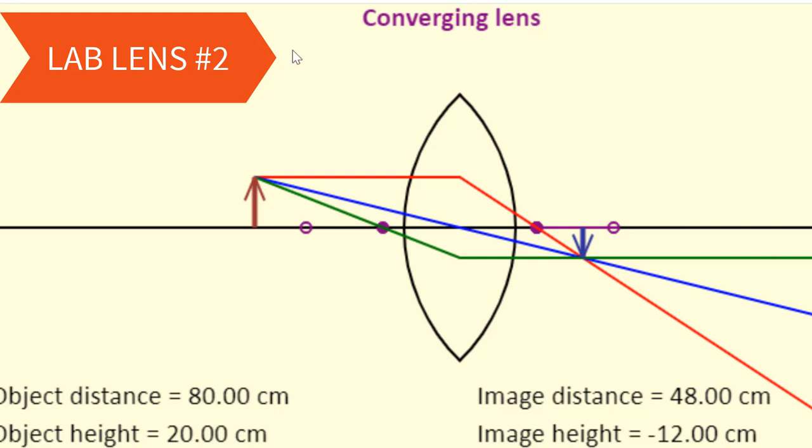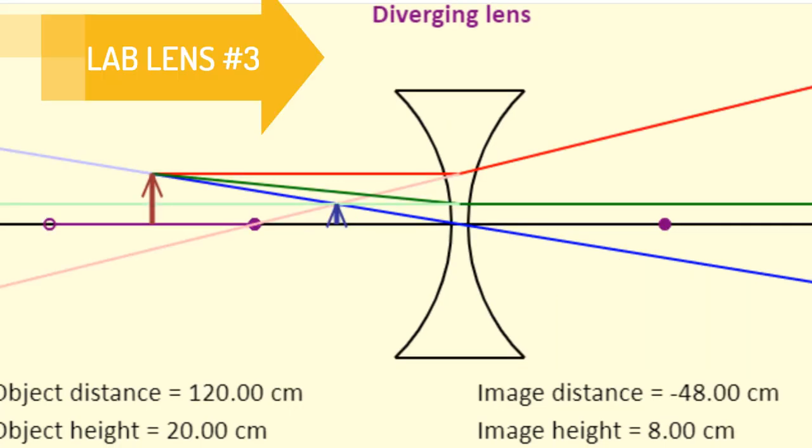And the last lab we're going to do is a diverging lens. The object's distance is 120 centimeters away. The object's height is 20 centimeters. The image's distance is negative 48 centimeters, which means it is a virtual image. The image's height is 8 centimeters, positive 8 centimeters, which means it's upright, but it is smaller. And so our diverging lens is going to be lab lens number three.